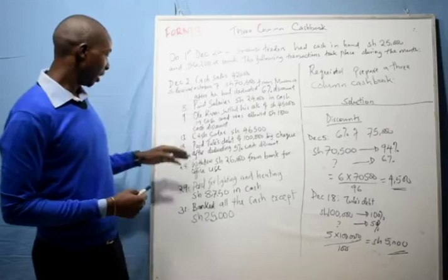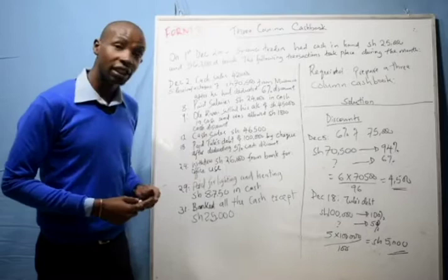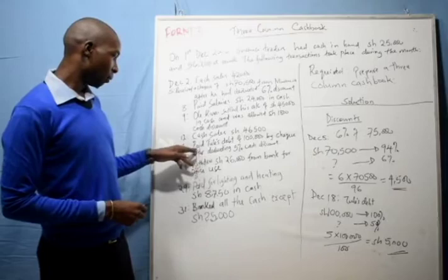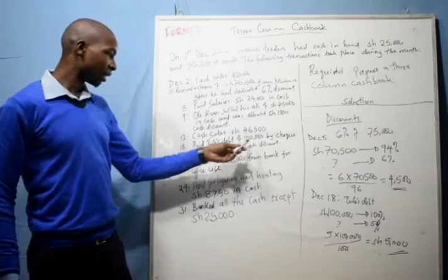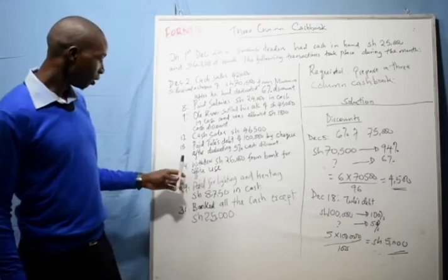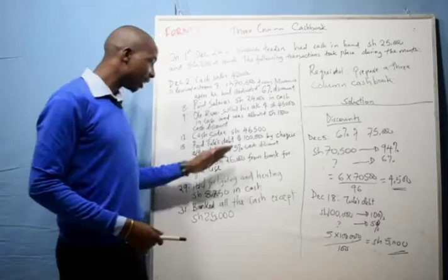On 9th, Olekivui settled his account of 45,000 in cash and was allowed a discount of 1,800. On 12th, cash sales of 46,500. On 18th, paid a debt of 100,000 by check after deducting 5% discount — this means we are going to calculate 5% from the 100,000. On 24th, we withdrew 26,000 from the bank for office use. This is a contra-entry, so we are going to write here: contra-entry.